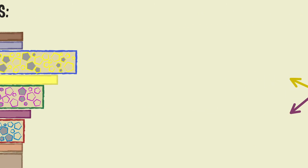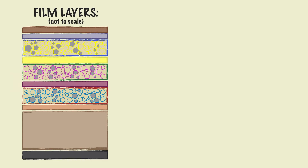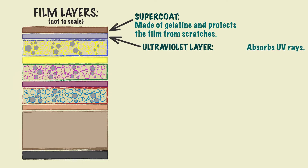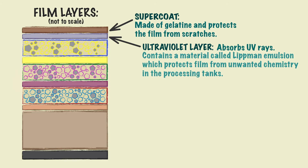There are also a number of other important layers, each with their own purpose, like the supercoat. This is made of gelatine and protects the film from scratches. Next is the ultraviolet layer, which absorbs UV rays so that the blue layer will not be exposed by them. This layer also contains a material called Lippmann emulsion, which, during development, acts as a barrier to protect the film from unwanted chemistry in the processing tanks.